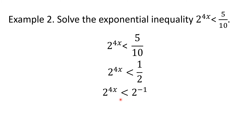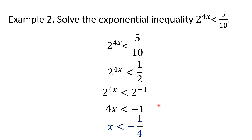Notice that the bases are similar already. According to the property of exponential inequalities, if the base is greater than 1 — in this case, 2 is greater than 1 — then the function is increasing. That means when we focus on their exponents, the inequality symbol will be retained. So 4x is less than negative 1. The less than symbol is retained. Now, using the multiplication property of inequality, we divide both sides by 4, and we get x is less than negative 1 fourth.